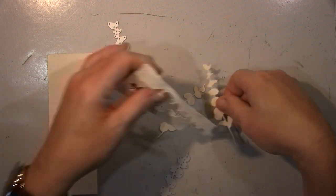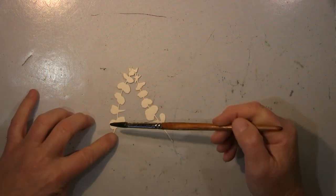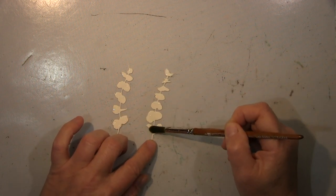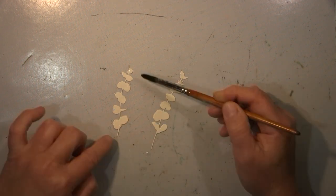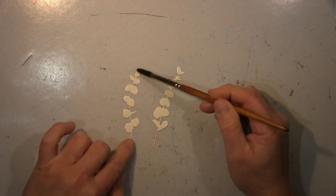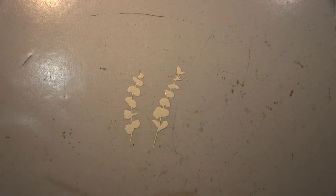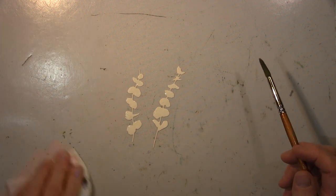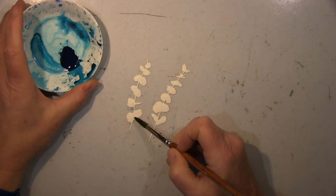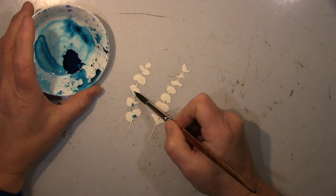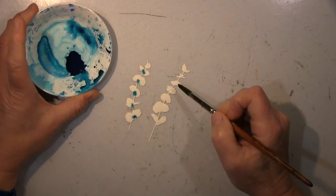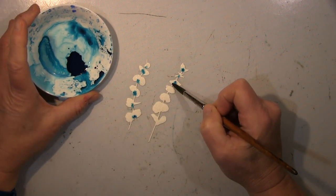Hallo ihr Lieben, heute ist mal wieder Karten machen Zeit. Und wie ihr gesehen habt, habe ich hier den Kreis mit einem Füller gemacht, in dem blaue Tinte ist, so blau-türkise Tinte. Und das Schöne mit Füllertinte ist, sie ist immer so ein bisschen, kannst du die mit Wasser aktivieren, bevor sie eben ganz nicht mehr zu aktivieren ist.